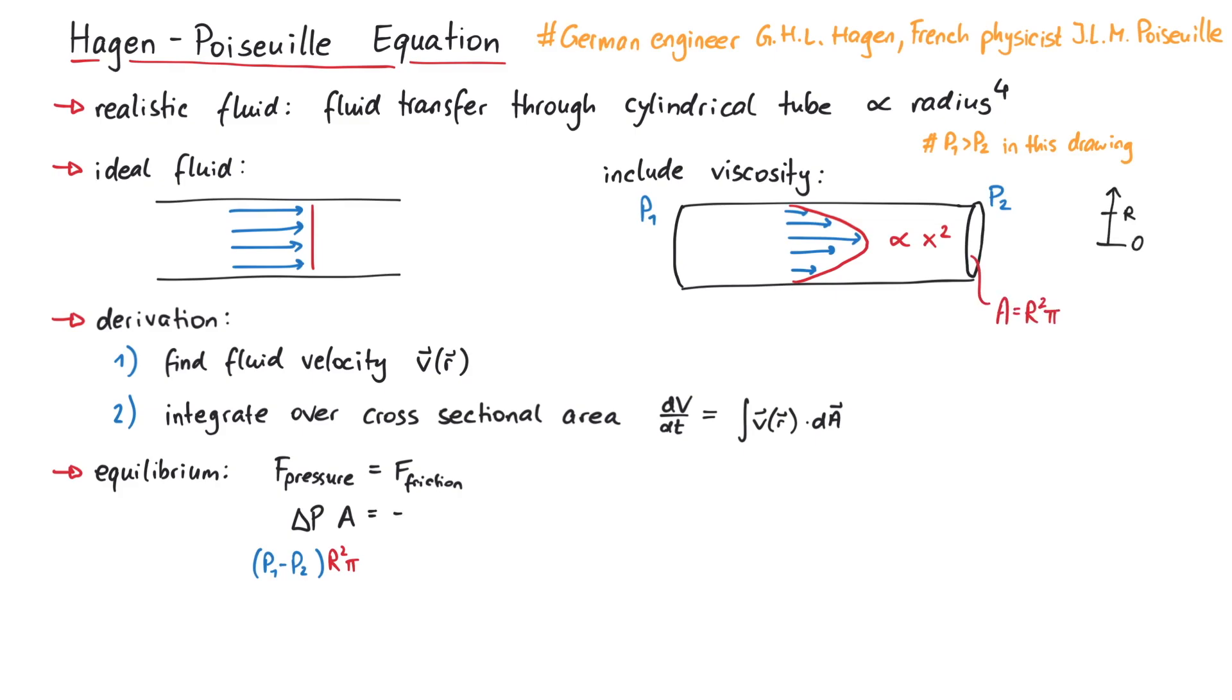The force due to friction is given by minus eta A times the derivative of velocity with respect to x. Here, eta is the dynamic viscosity, which has units of Pascal seconds. A typical example to know the order of magnitude of eta could be water at 20 degrees Celsius, which has a dynamic viscosity of around 1 mPa second.